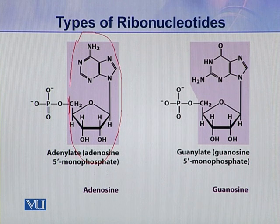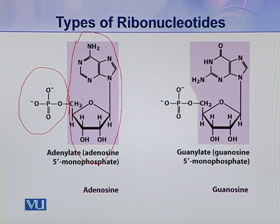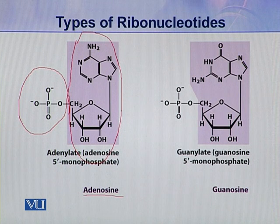And when to this adenosine a phosphoric acid is attached, it becomes a nucleotide. So this adenosine becomes adenylate.